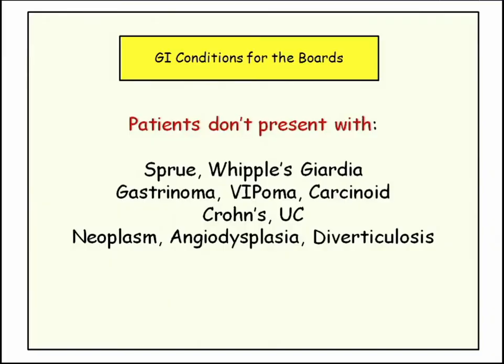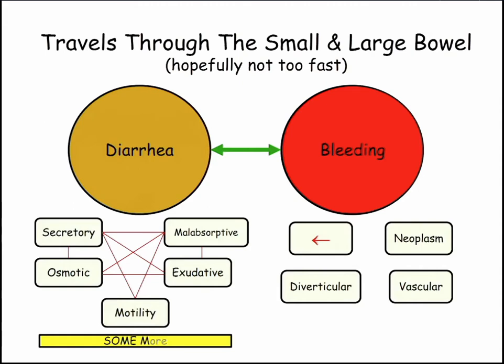Celiac conditions on the boards — patients don't present with these diseases, they present with symptoms. The symptoms are diarrhea and bleeding, traveling through the small and large bowel. We used to call it celiac sprue; you guys call it celiac disease now.